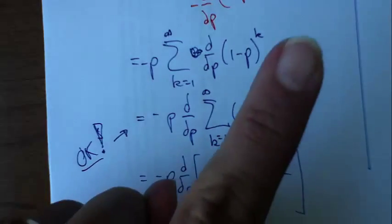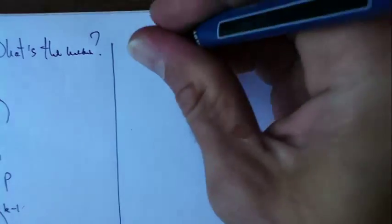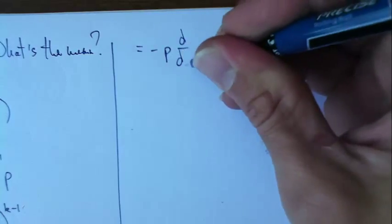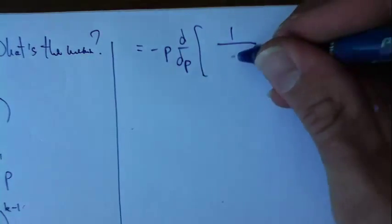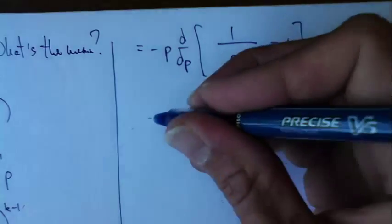All right. Now I'm going to move up there. I'm out of space. So all this now is equal to negative p times the derivative with respect to p of 1 over—that bottom is just p—minus 1.